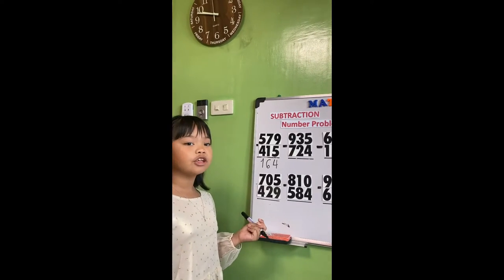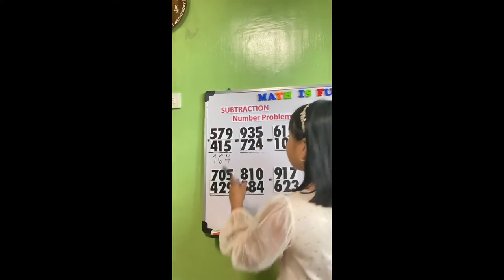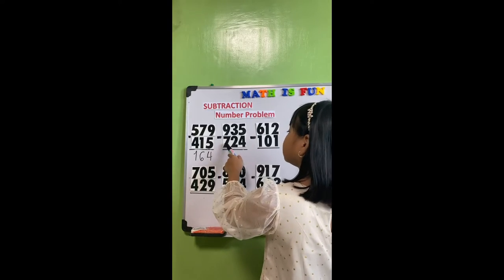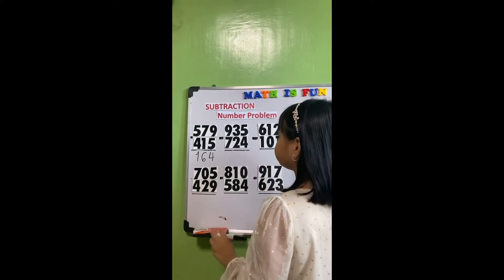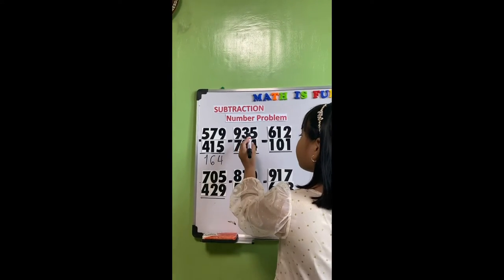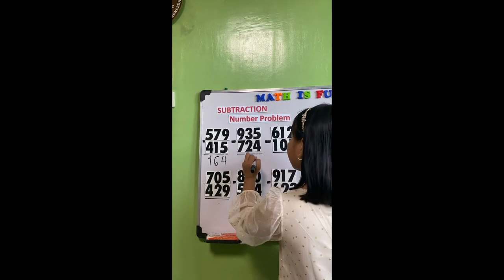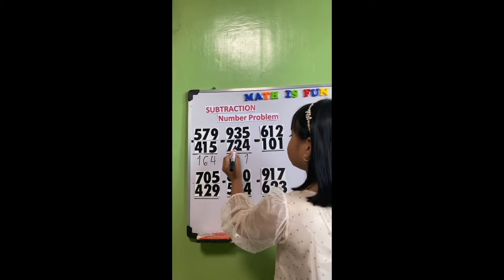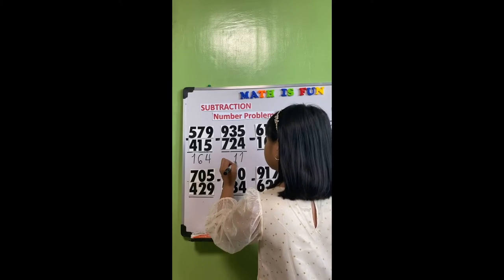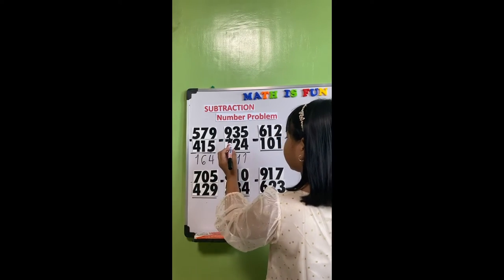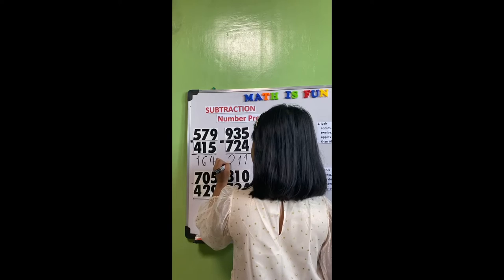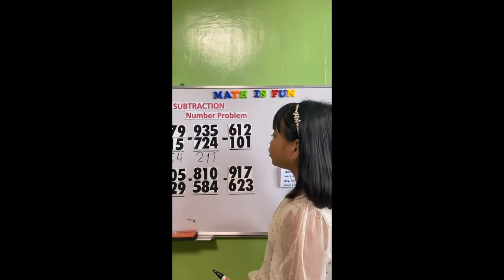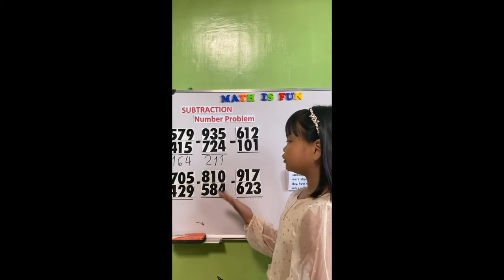Let's go to the second equation: 935 minus 724. 5 minus 4 equals 1. 3 minus 2 equals 1. 9 minus 7 equals 2. Our answer to number 2 is 211.